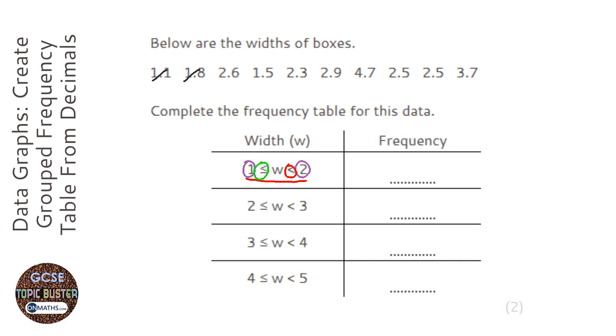So 1, 2, 3, 3 of those. Then we're looking for numbers between 2 and 3. 1, 2, 3, 4, 5.